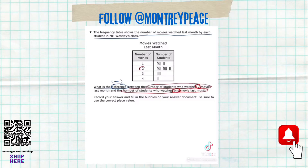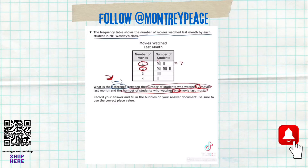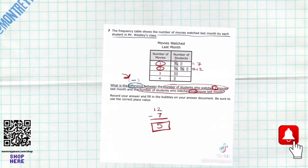If we look at the table for number one and number two, we need to see how many students are in each category. For number one we have 7, and for number two we have 12. When we're finding a difference, we do subtraction: 12 minus 7 is 5. The answer is 5 students.